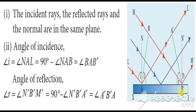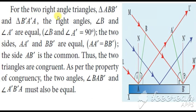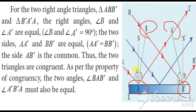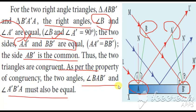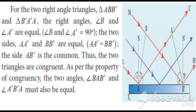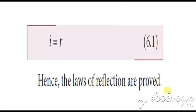This is what has been proved. Since the two triangles ABB' and B'A'A are right triangles with one side AA' equal to BB', and AB is common, we can say the two triangles are congruent. Since the two triangles are congruent, the angles are also equal, so i equals R. This proves the law of reflection.